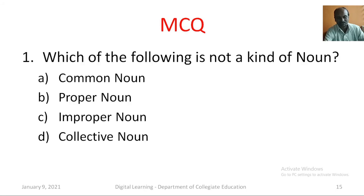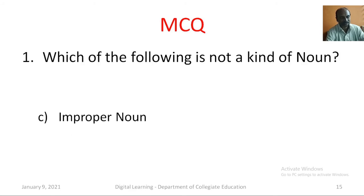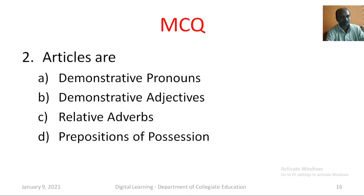Now let me check your understanding. I will ask some multiple choice questions. Please try to answer the questions. Question number one: which of the following is not a kind of noun? Option A: common noun. Option B: proper noun. Option C: improper noun. Option D: collective noun. Yes, you are correct. The correct answer is improper noun.